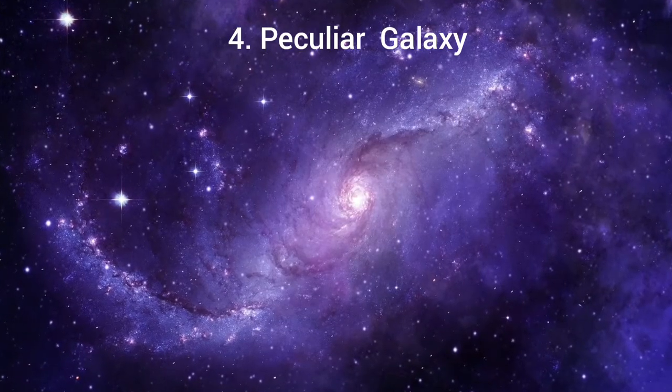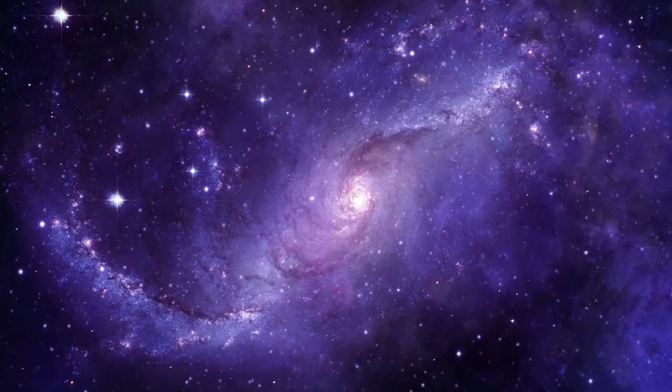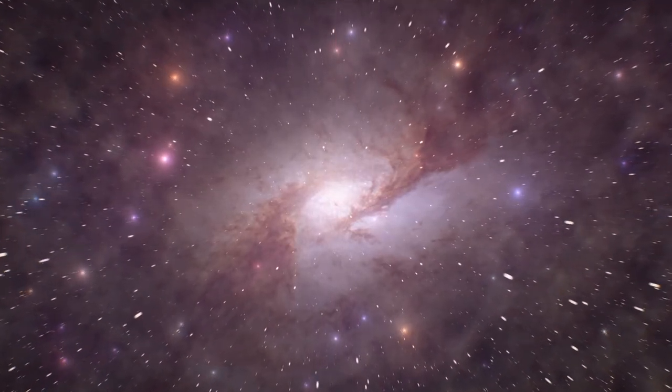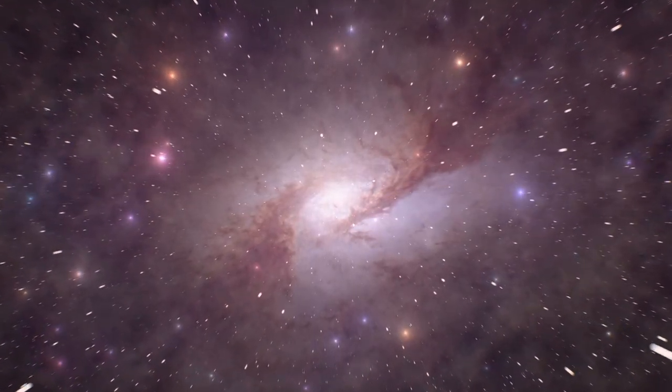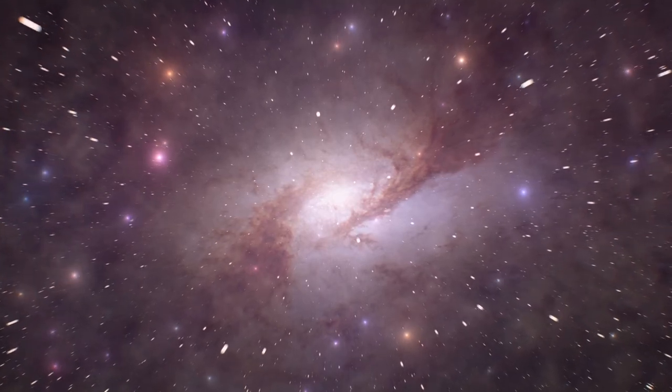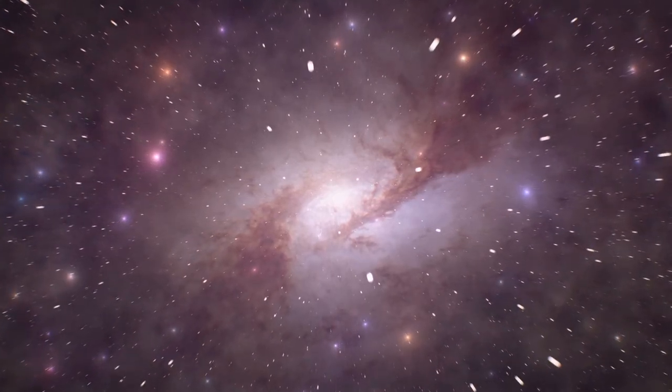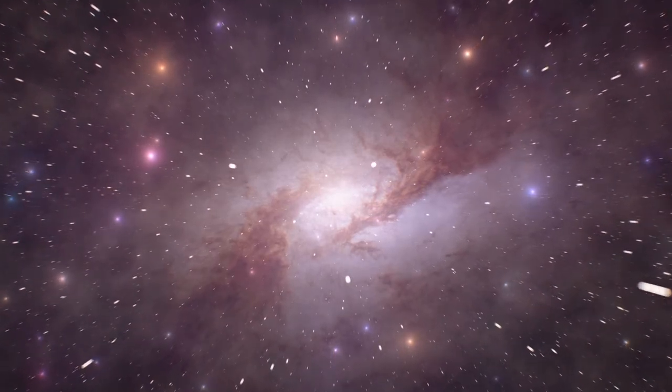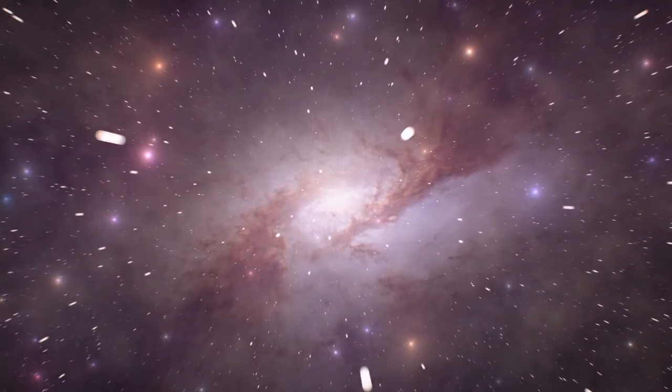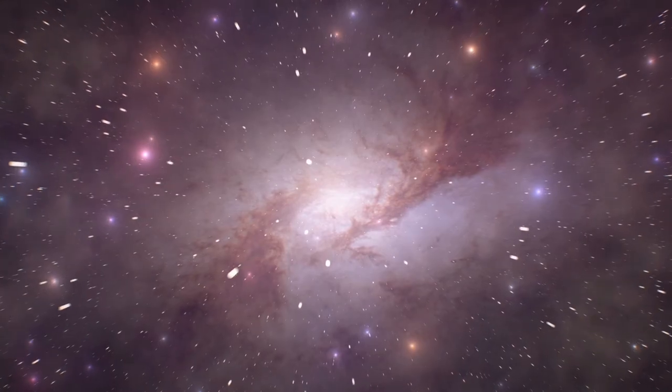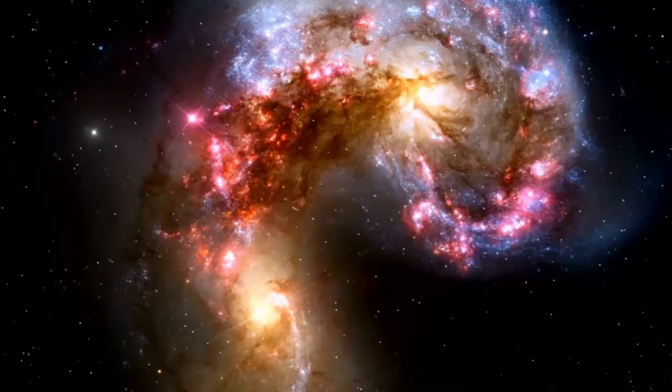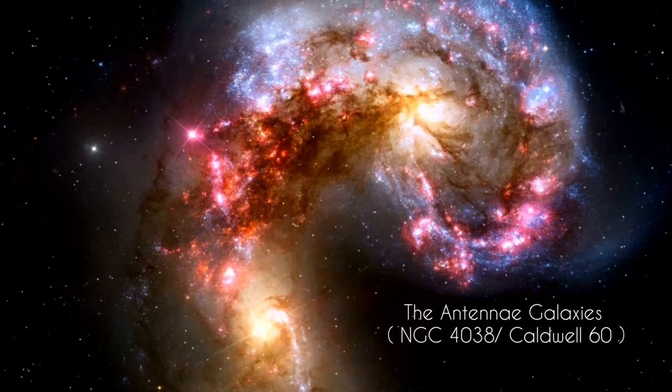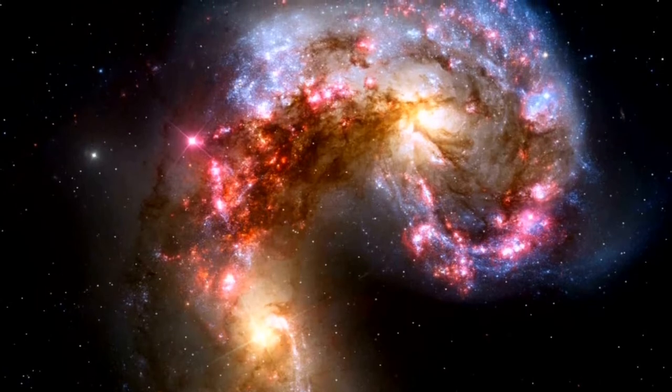Number 4: Peculiar galaxy. Peculiar galaxy is a galaxy of unusual size, shape, or composition. Between 5 and 10 percent of known galaxies are categorized as peculiar. Astronomers have identified two types of peculiar galaxies: interacting galaxies and active galactic nuclei. The Antennae galaxies, also known as NGC 4038 or Caldwell 60, are examples of peculiar galaxies.